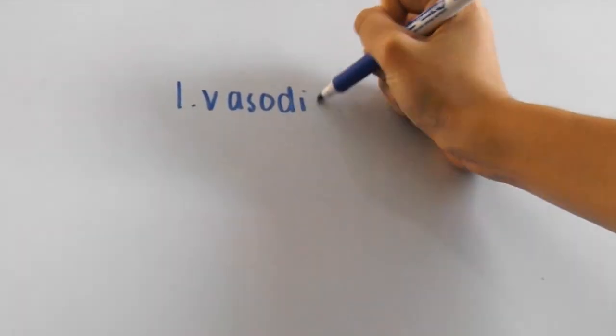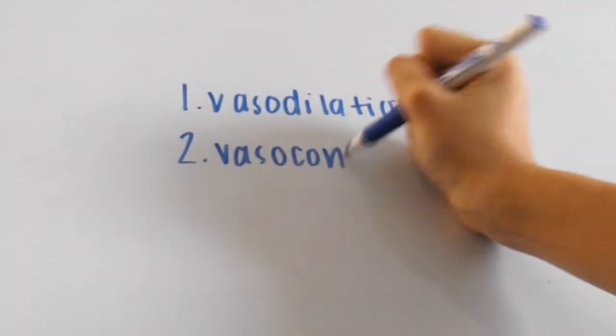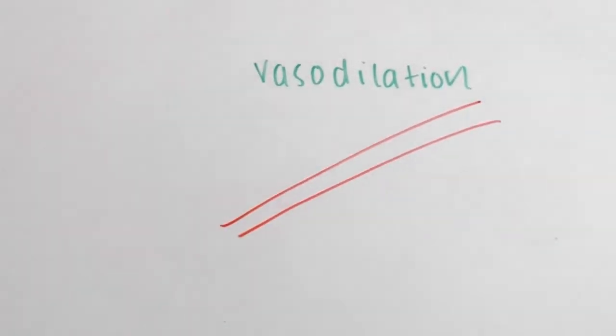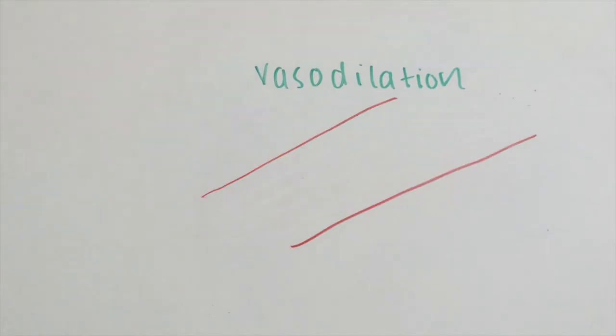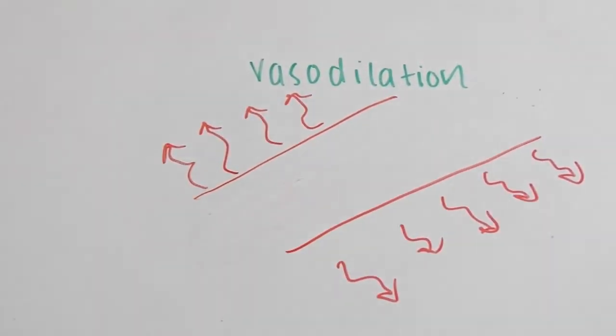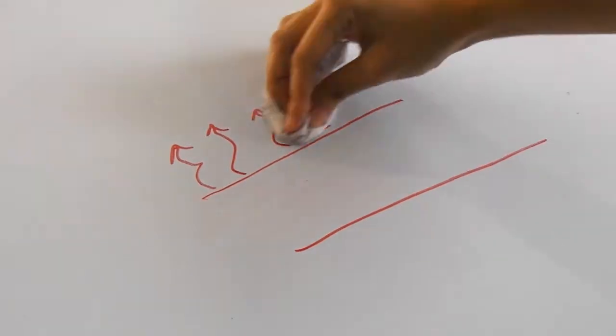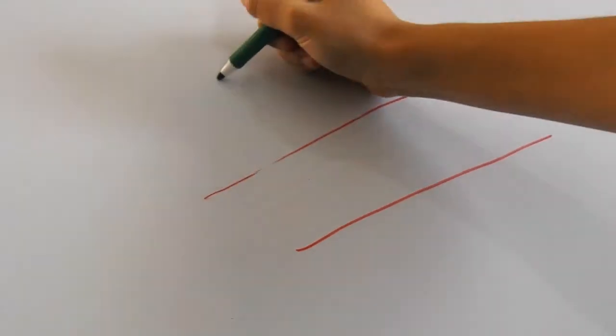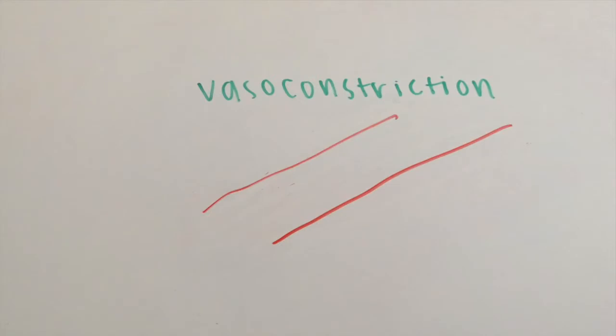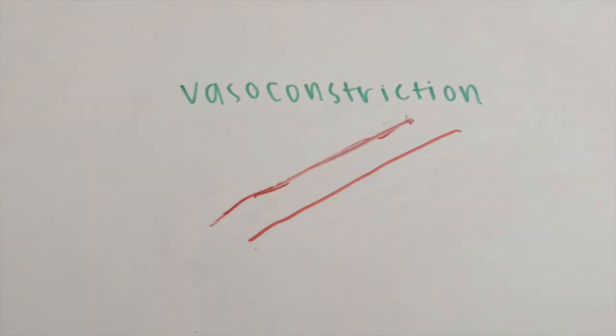Some other processes that occur in the circulatory system are vasodilation and vasoconstriction. In vasodilation, blood vessels dilate and become wider like this. Blood flow is elevated, and heat escapes into the atmosphere while cooling the organism down. Vasoconstriction is the opposite. It reduces blood flow and heat transfer by decreasing the diameter of the blood vessels, preventing heat from escaping.